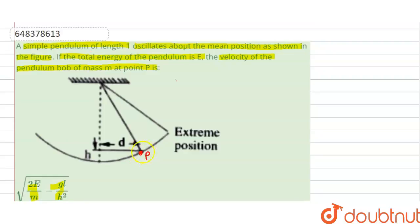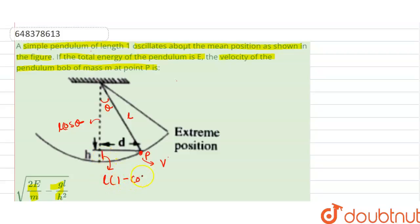Now we consider position P. At this position, let the velocity of the particle be v. The horizontal distance from the mean position to point P is given as d. We consider an angle theta, so the total length is l. From the geometry, l·cosθ is the vertical component, so the height h from the mean position is l(1 - cosθ).